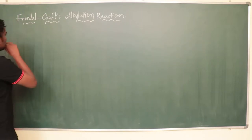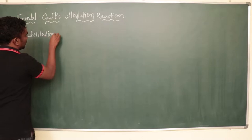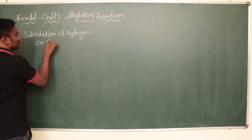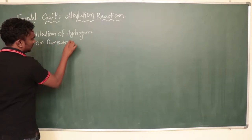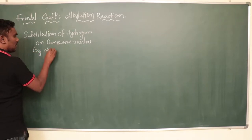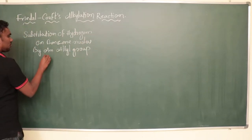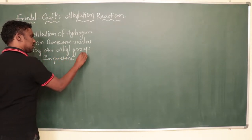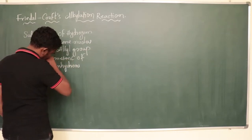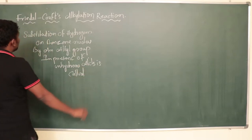Friedel-Crafts alkylation — first, the definition. The substitution of hydrogen on the benzene nucleus by an alkyl group, in the presence of anhydrous AlCl3, is called Friedel-Crafts alkylation.